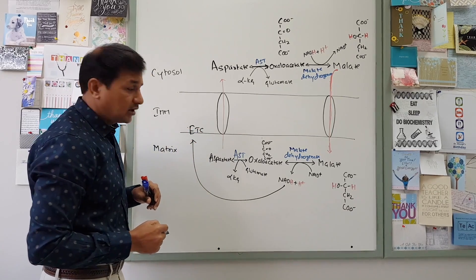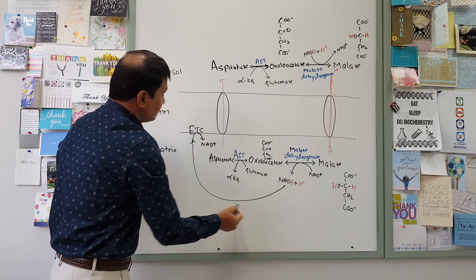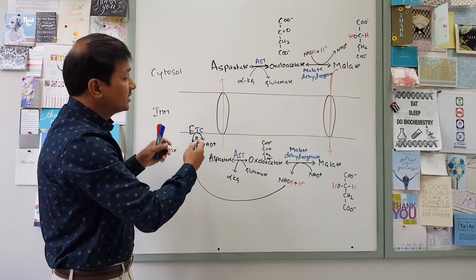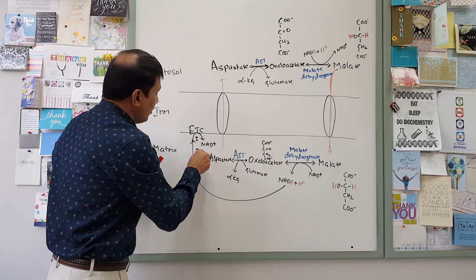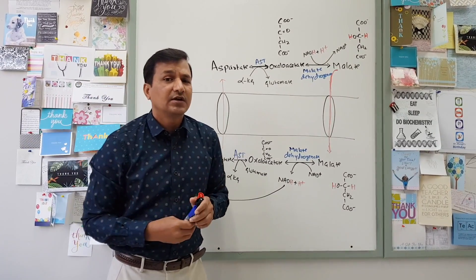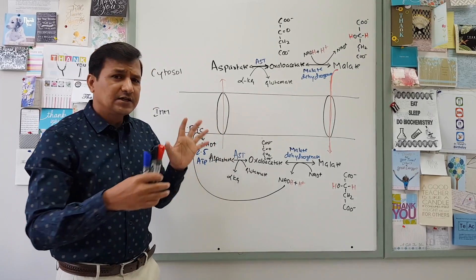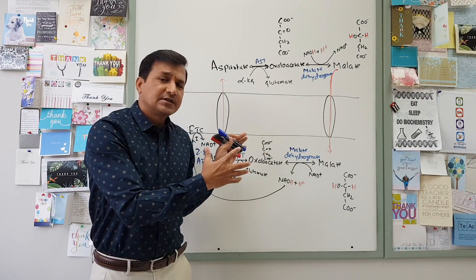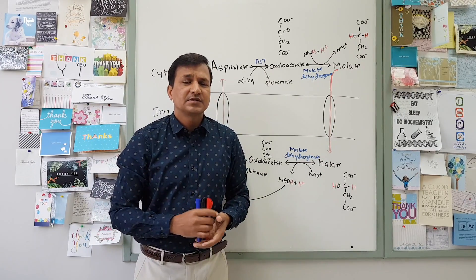The NADH+H+ in the matrix goes into the electron transport chain, which is located in the inner mitochondrial membrane. It is oxidized at complex I of the electron transport chain back into NAD+, and H and H+ are pumped into the intermembrane space. One NADH+H+ is worth 2.5 ATPs. You can watch my video on the electron transport chain — the link is in the description and also appearing in the upper right corner. So this is all about the malate-aspartate shuttle mechanism. I hope this video has helped you in understanding shuttle mechanisms. Thanks for watching.